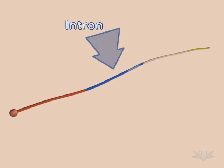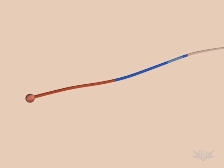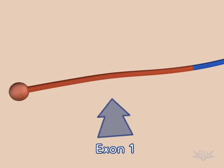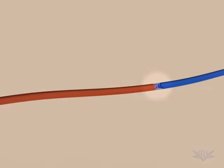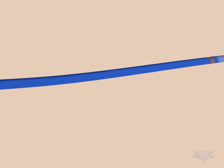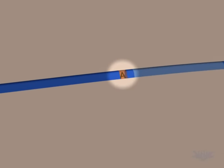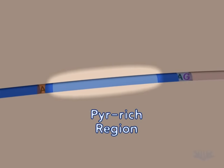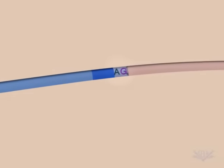Several signals exist within the intron that are used in the splicing process. From the 5' end of the intron, these are GU, the A branch site, a pyrimidine-rich region, and the 3' AG.